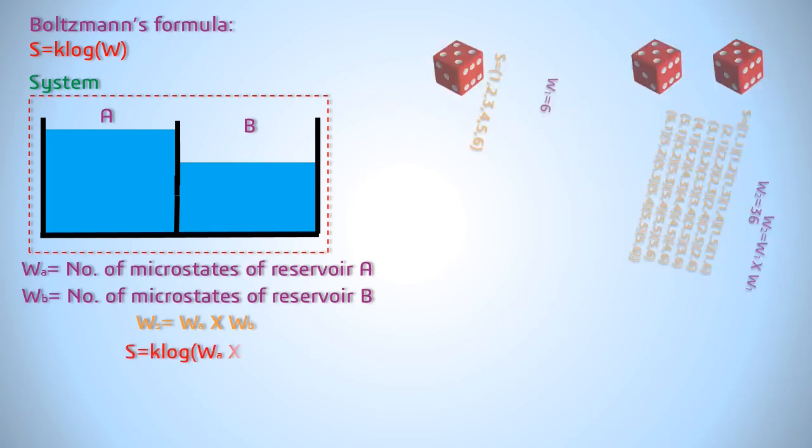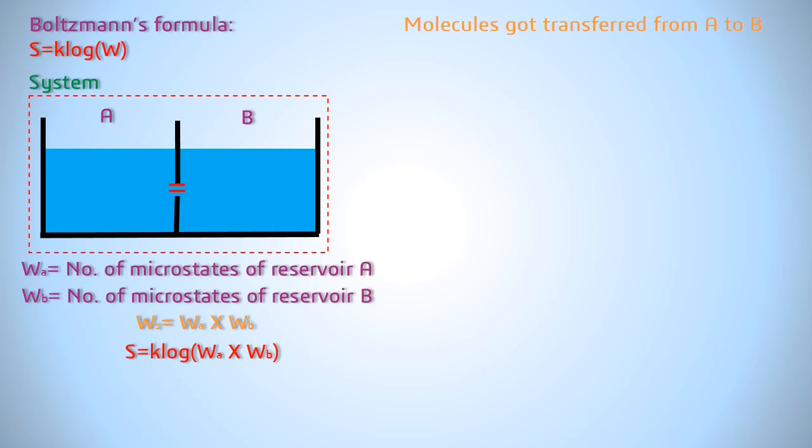So entropy of our system is k times WA into WB. Now, if we connect both the reservoirs, the water level of A falls and B rises till they reach an equilibrium state. Since the molecules from A went to B, the number of microstates in A decreased and B increased.